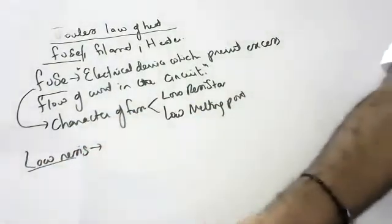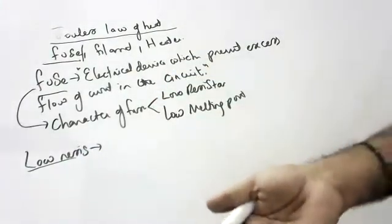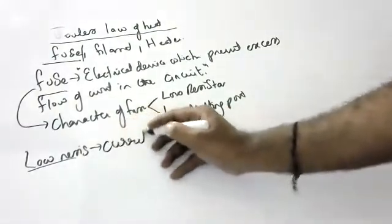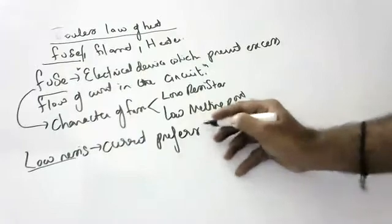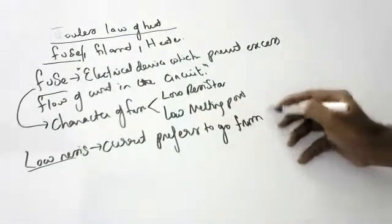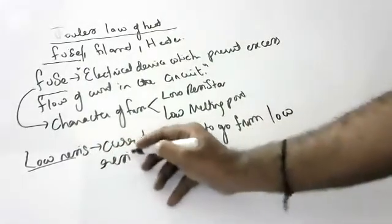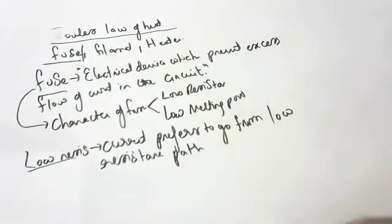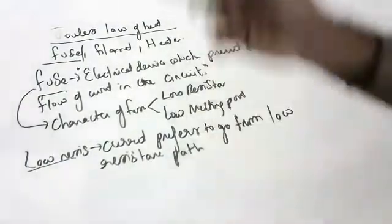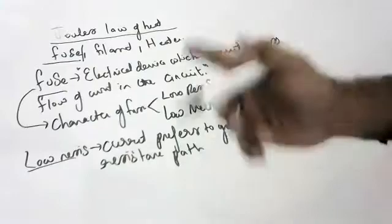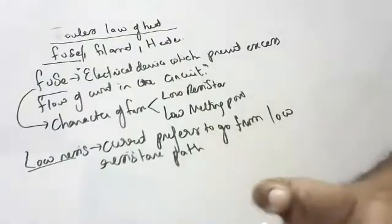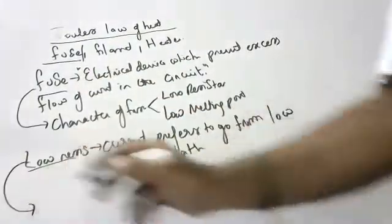Why low resistance? When you are going on the road, do you prefer a high traffic lane or a low traffic lane? In the same way, current also prefers to go from a low resistance path. So if the fuse has low resistance, current will happily flow through it.